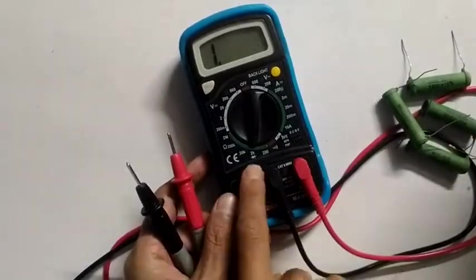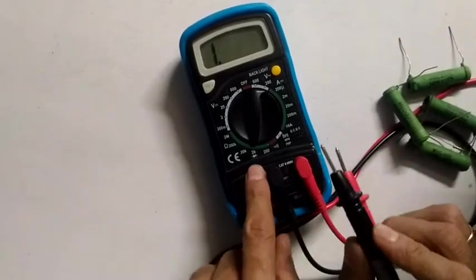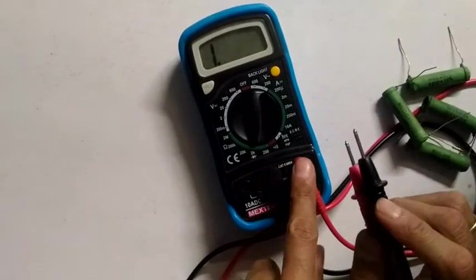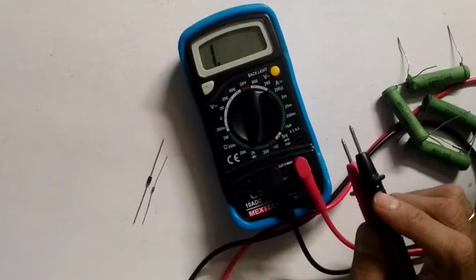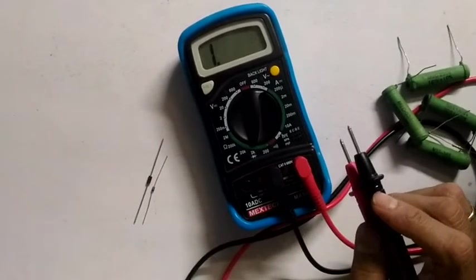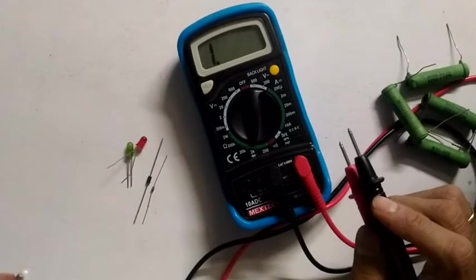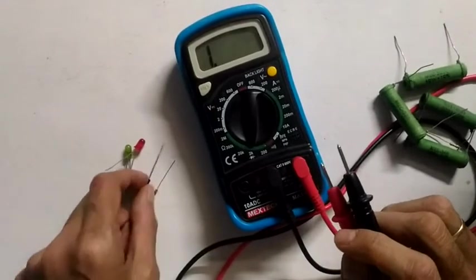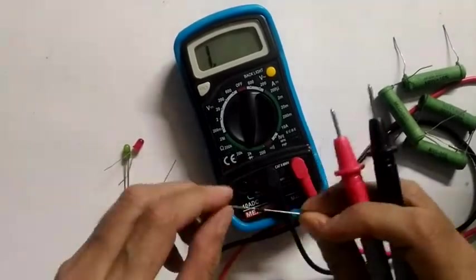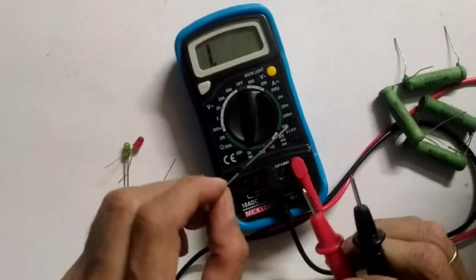Now here there is one which is given for diodes - a 2k range with a diode symbol over here for checking whether a diode is correct or not. I have a few diodes and 2 LEDs with me for checking whether they are working or not. Here this is a standard 1N4007 diode.